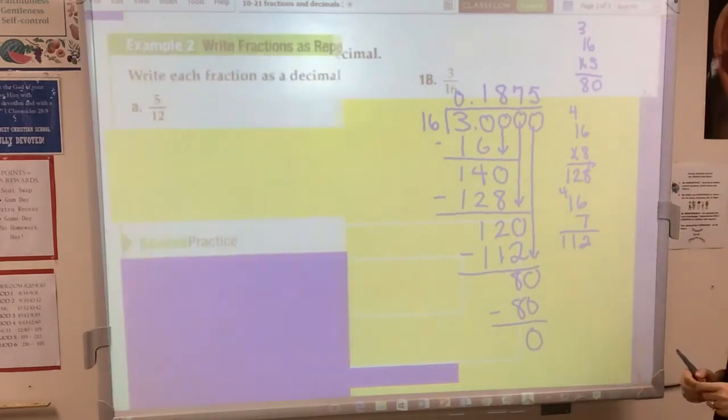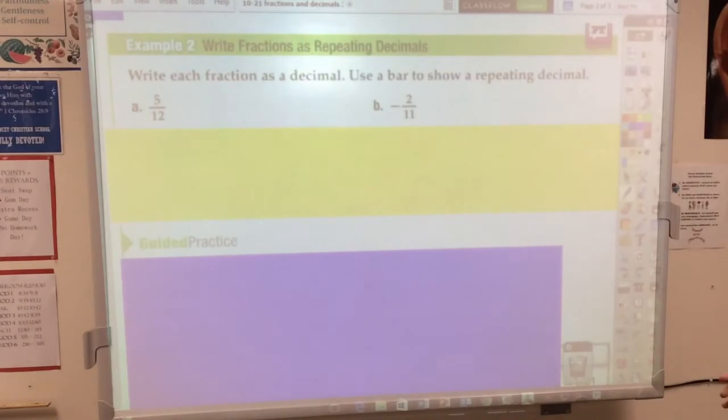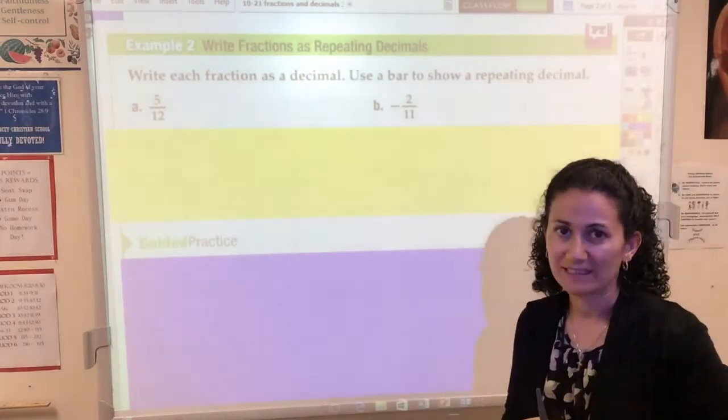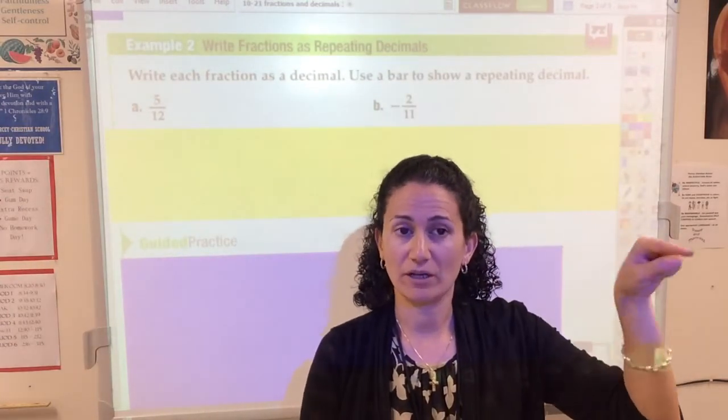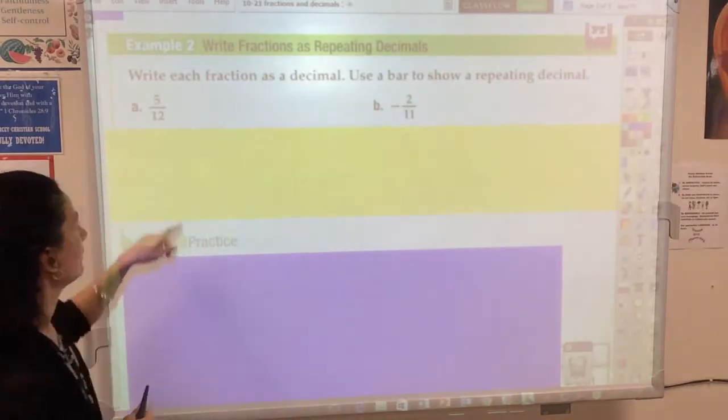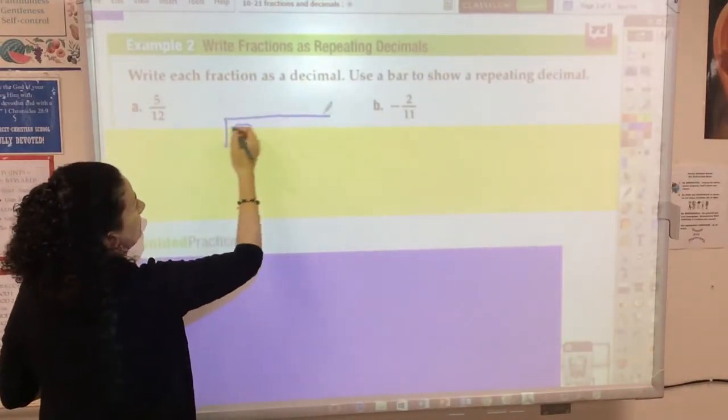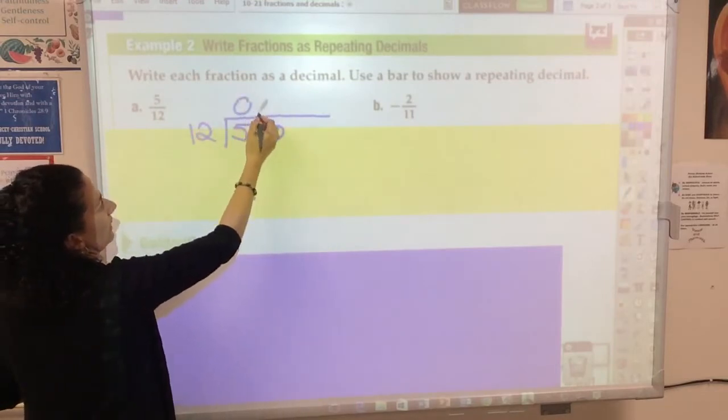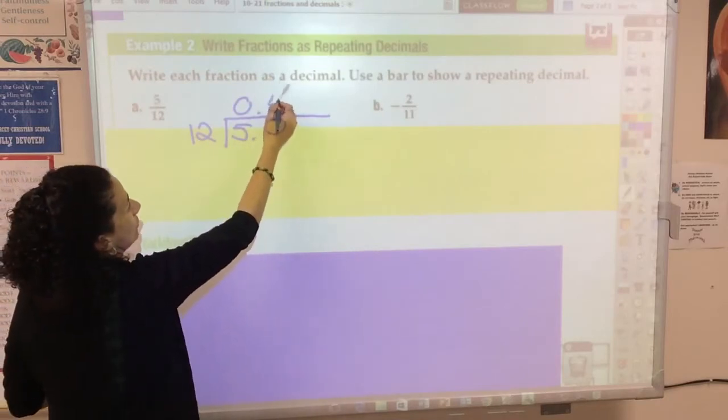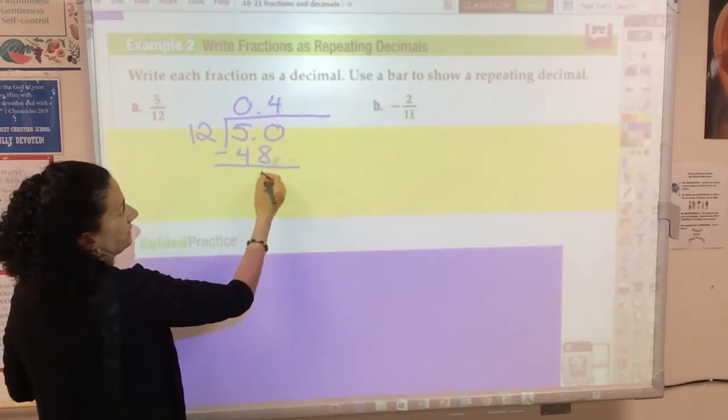Let's look at some more examples of writing fractions as a decimal. Sometimes the decimals do not terminate, sometimes they repeat. That means the numbers keep on going and going. Let's look at some examples. Make sure you're writing these down: 5/12. So 5 divided by 12. Add my decimal and my 0. 12 doesn't go into 5. It goes into 50 four times because 4 times 12 is 48. Remainder 2.